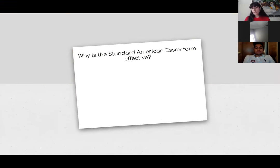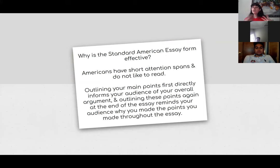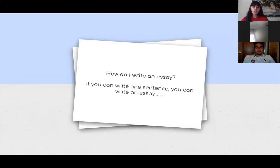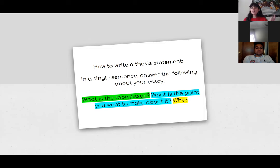Why is the standard American essay form effective? We have very short attention spans and really don't like to read. Outlining your main points first directly informs us of your overall point and argument. Outlining these at the end reminds us why we're reading and can reinforce the initial argument, especially if you reworded effectively. My theory is if you can write one sentence, you can write an effective essay — and that's your thesis statement. A thesis statement will always have three components: what is the topic or issue, what is the point you want to make about it, and why are you making that point.